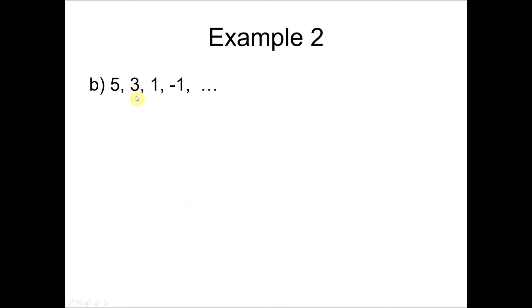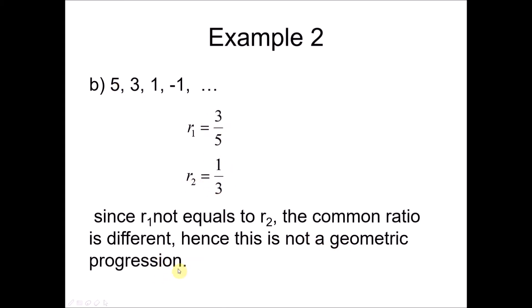One more example: 5, 3, 1, −1. We want to determine whether this is a geometric progression. First, find the ratio between the second and first terms: 3 divided by 5. Then the next ratio: 1 divided by 3. We don't have to continue since the first ratio and second ratio are different. Hence, this is not a geometric progression since these two ratios are not equal.